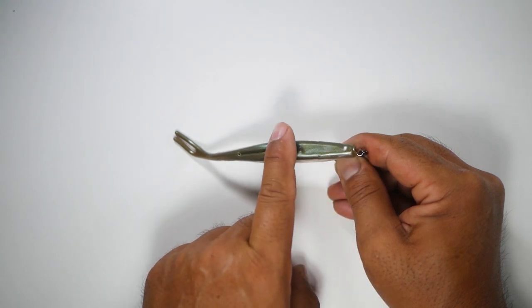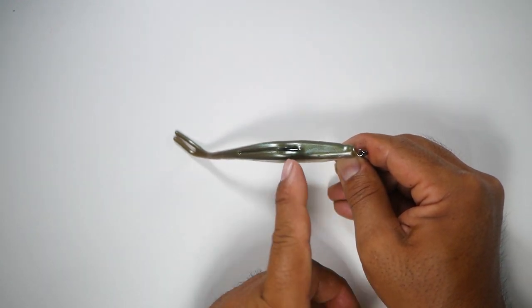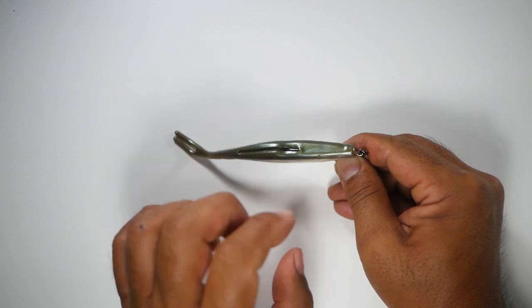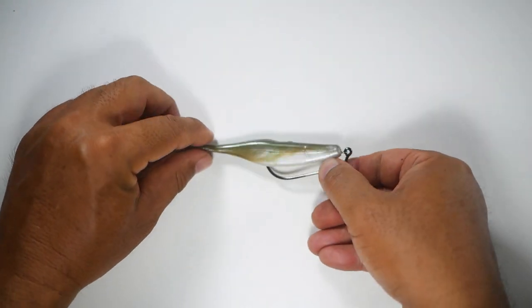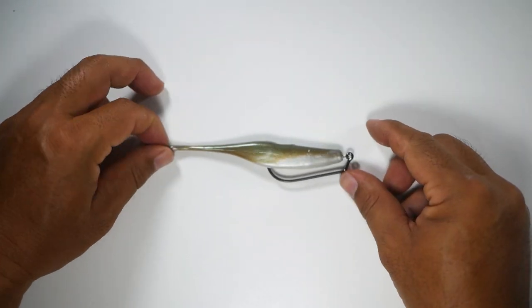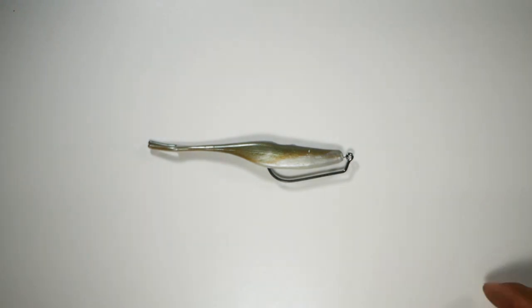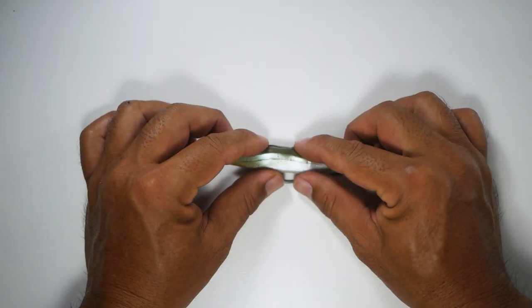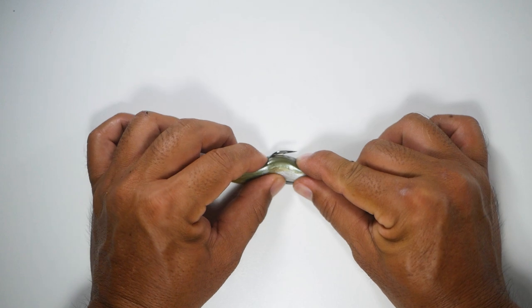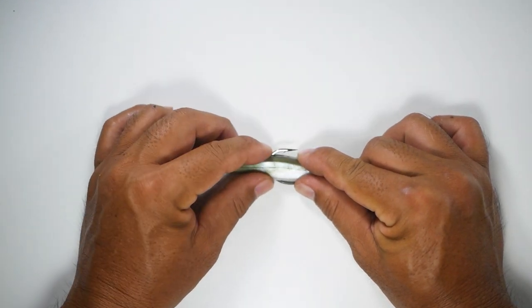So anything that runs over it will run right over the hook, but yet that will just pop out if a fish bites it. And it'll still sit straight and run straight through the water. Then when the fish grabs it, that hook point will pop out and expose to hook the fish.